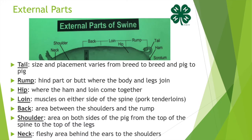Now we'll finish with the top part of our swine. The tail is easy to spot; however, the size and placement varies from breed to breed and pig to pig. The rump is the hind part or butt where the body and legs join. The hip is where the ham and loin come together. The loin refers to the muscles on either side of the spine — that's where we get our pork tenderloins.